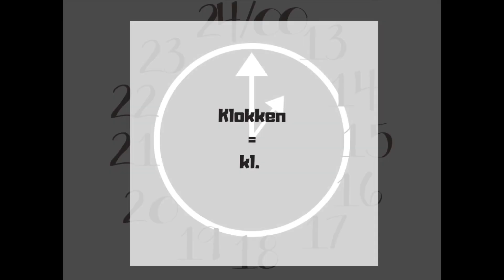When you're writing about klokken, you can shorten it to kl. Just remember to always put it in front of the number, i.e., in front of the time.